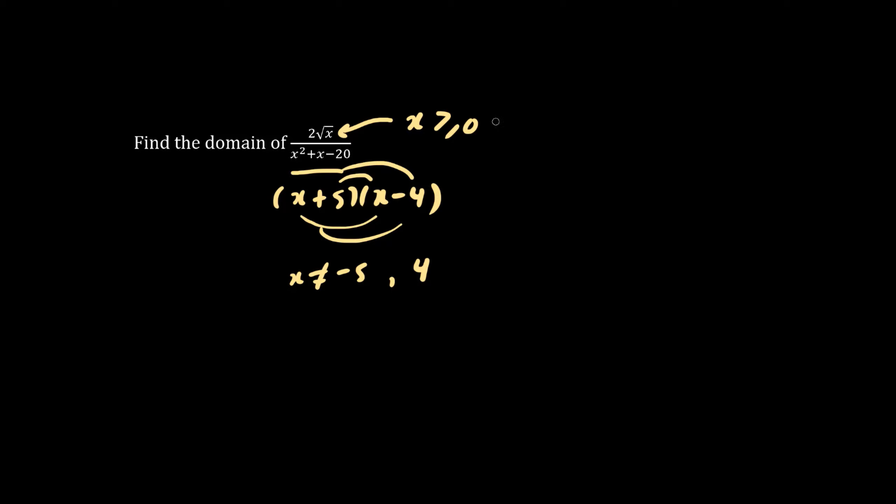So x is greater than or equal to 0. And these additional constraints are true as well. Now it's not absolutely necessary to write x does not equal to negative 5 because this constraint already encapsulates this fact.